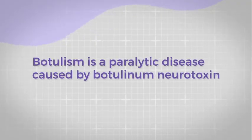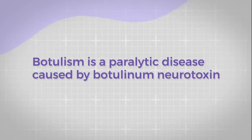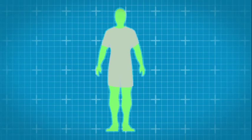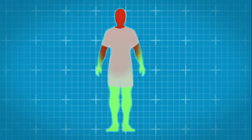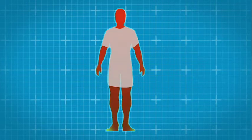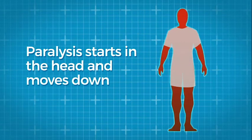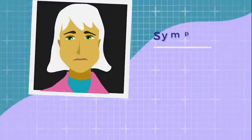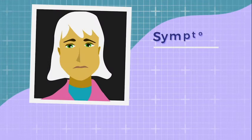Botulism is a paralytic disease caused by botulinum neurotoxin. Patients generally have symmetric descending flaccid paralysis of motor and autonomic nerves. Paralysis starts in the head and moves down. An illustration of a man appears. His body changes from green to red from his head to his toes.